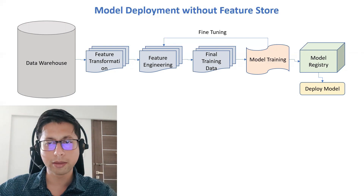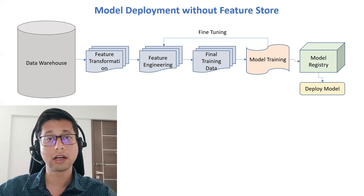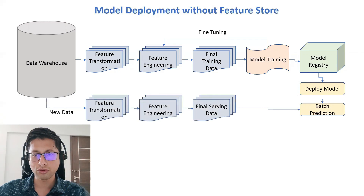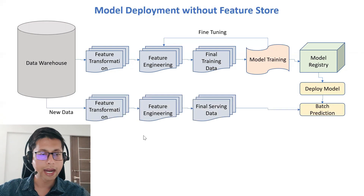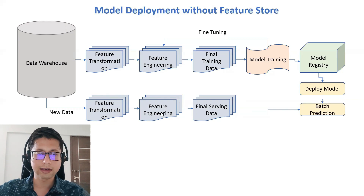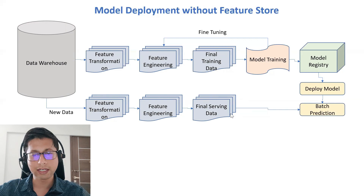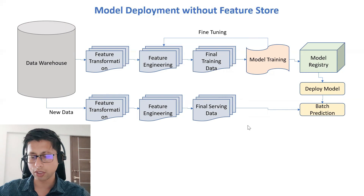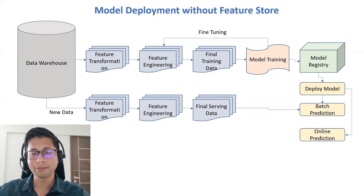Prediction happens in two types: batch prediction and online prediction. For batch prediction, we read the model from the model registry, data comes from the warehouse again, and we deploy a pipeline that does feature transformation and feature engineering on new data, prepares the final data for serving, inputs it for batch prediction, and outputs the result.